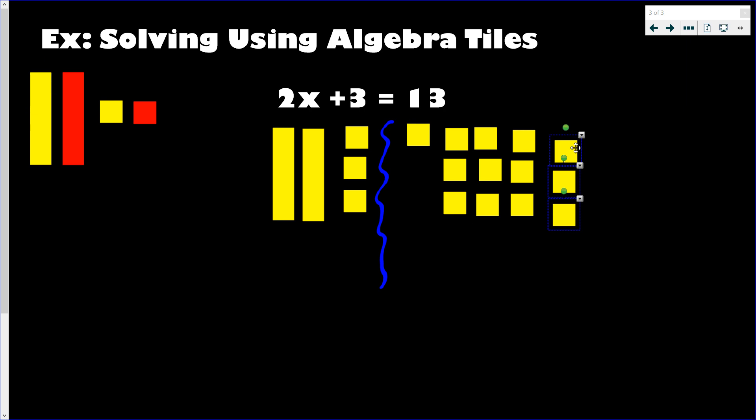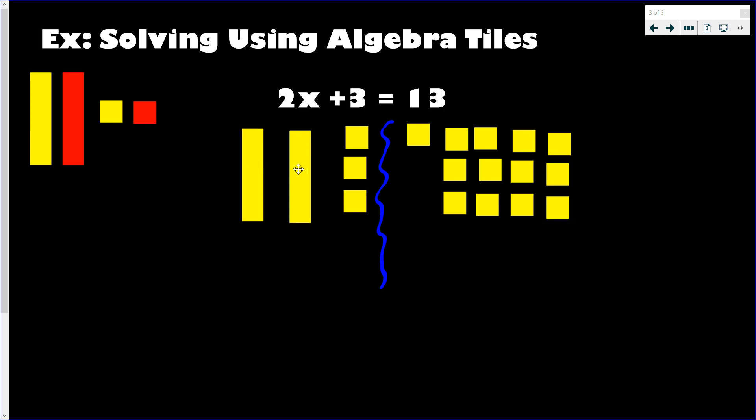And then thirteen. All right, sorry about that. Now next thing we need to do is add our zero pairs to get our x's by ourselves. So we want these 2x by itself, so I'll add these three zero pairs here, cancel out the yellow with the red. But just remember, I have to do it to both sides, so I'll add three more red on this side.